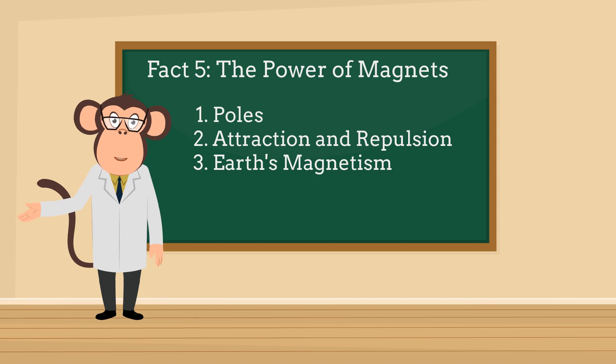Fact 5: The power of magnets. Get ready to be attracted to this magnetic fact. Poles: Magnets have two ends called north and south poles. Attraction and repulsion: Opposite poles attract, while like poles repel. Earth's magnetism: The earth itself acts like a giant magnet, making compass needles point north.